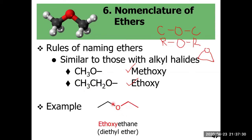Let's take a look at how to give names for ethers. This molecule is named in substitutive IUPAC as ethoxyethane — this group is your ethoxy and the alkane group becomes ethane. The other way of naming this is using the functional class nomenclature, where we list the two alkyl groups in the structure in alphabetical order as separate words. So for this molecule, with two ethyl groups, it's named as diethyl ether.